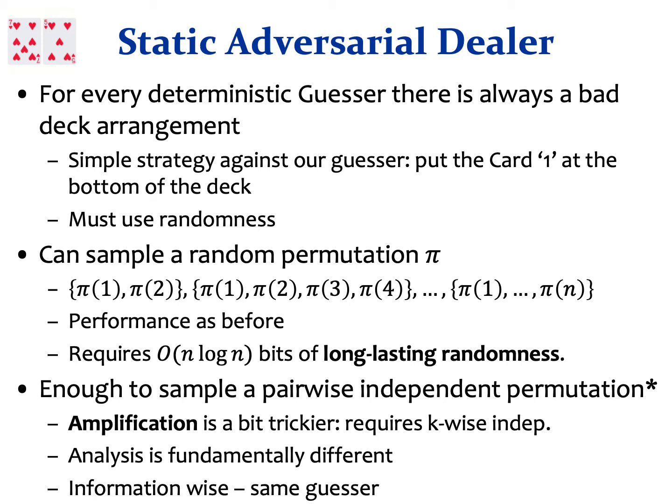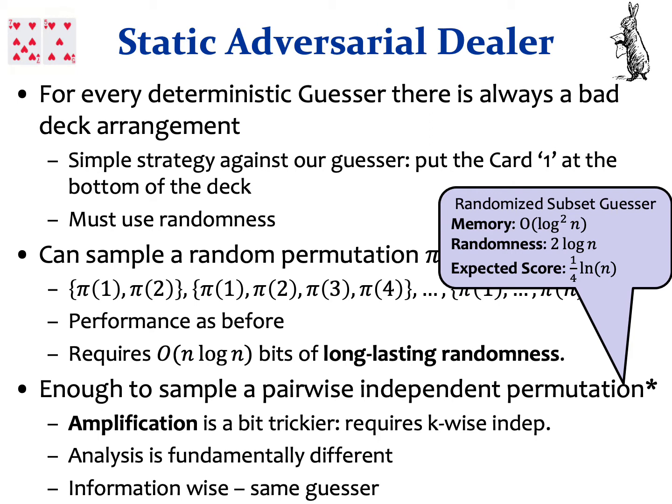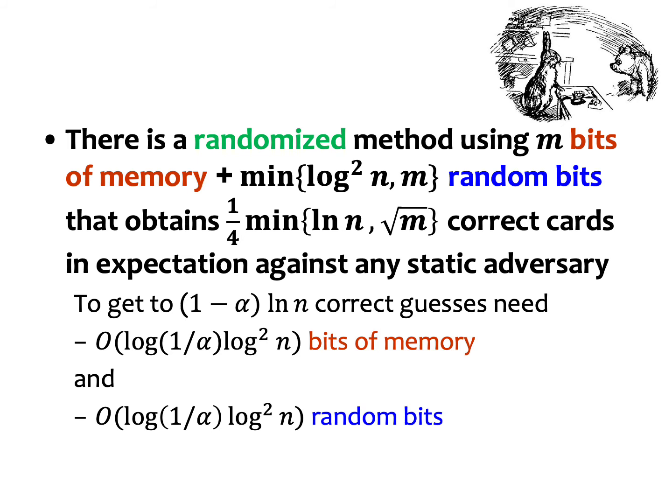The amplification is a bit trickier and requires higher-wise independence, as the analysis is fundamentally different, but information-wise it is the same guesser. So with order log squared n bits of memory and only 2 log n bits of long-lasting randomness, a randomized subset guesser can score quarter ln n correct guesses against any static dealer.